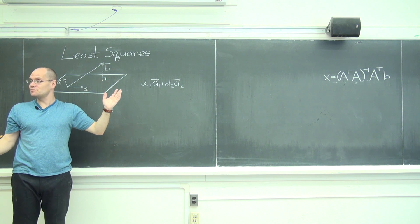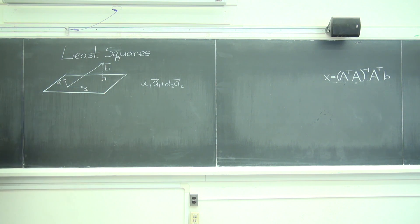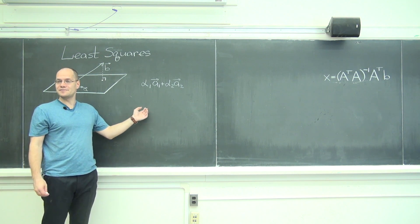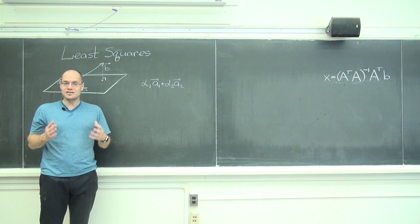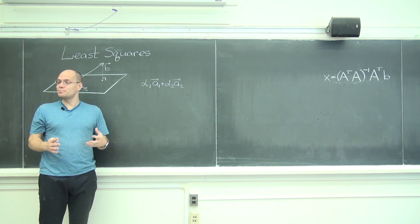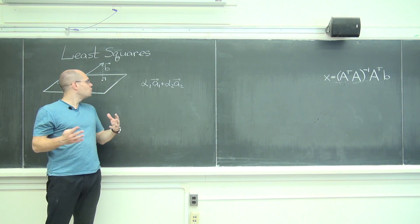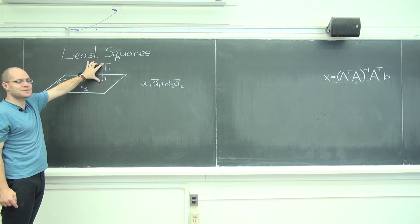So do you guys agree with the geometric? That's least squares, right there. Now, let's just write down this property of being orthogonal to the plane algebraically. Well, number one, what's orthogonal to the plane? It's this segment right here.